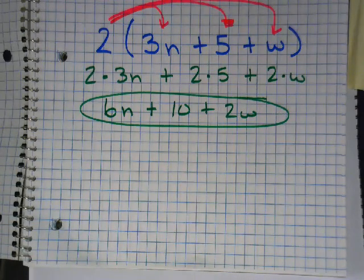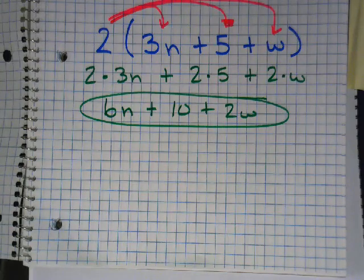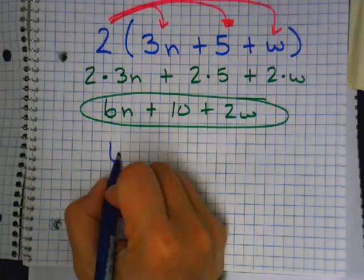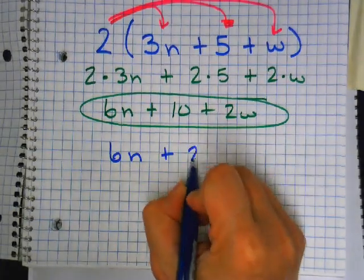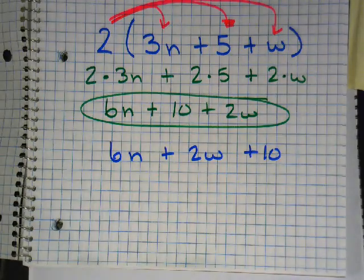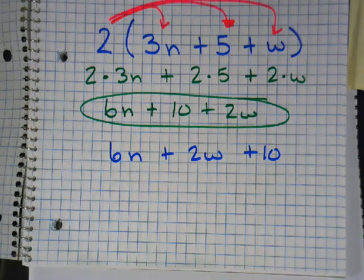Now in high school, and we can start it now, your final answer should be written in alphabetical order, and then the one without the variable goes at the very end. So how would I rewrite this answer? 6N plus 2W plus 10. This would be what your high school teacher will expect from you. But if you want to get into the habit of it, you could totally start today.